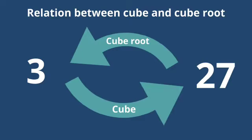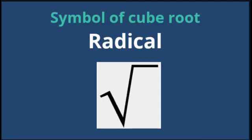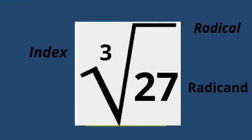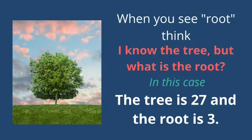The relation between cube and cube root: 3 is the cube root of 27 and 27 is the cube of 3. This symbol is used for cube root with a small 3. The symbol is called radical, the number inside the radical is called radicand, and the small 3 is called index. When you see the cube root of 3, the value is 27.